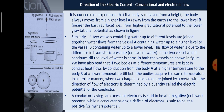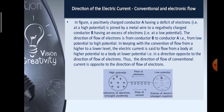A conductor having an excess of electrons is said to be at a negative potential, while a conductor having a deficit of electrons is said to be at a positive or higher potential. In the figure, a positively charged conductor A at high potential is joined by a metal wire to a negatively charged conductor B at low potential. In keeping with the convention of flow from higher to lower level, electric current is said to flow from a body at higher potential to a body at lower potential — in a direction opposite to the direction of flow of electrons. Thus, the direction of flow of conventional current is opposite to the direction of flow of electrons.